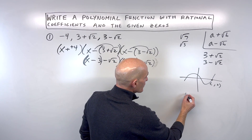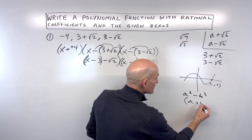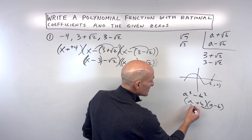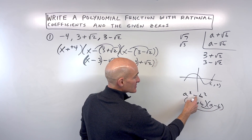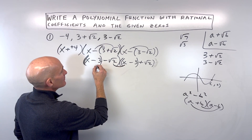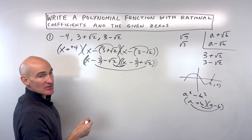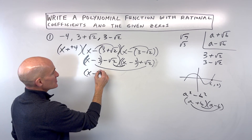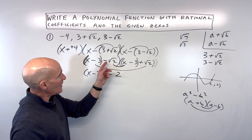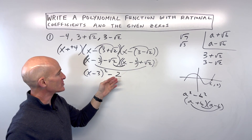If you know how to work with difference of two squares — a squared minus b squared factors to a plus b times a minus b — the inside and outside products cancel, and that's why there's no middle term. Similarly here, the inner and outer products cancel, leaving us with x minus three times x minus three, which is x minus three squared, minus a negative root two times a positive root two, which is negative two.